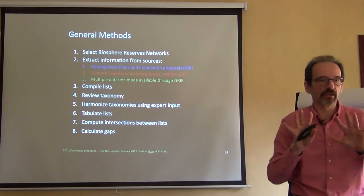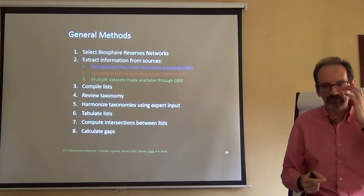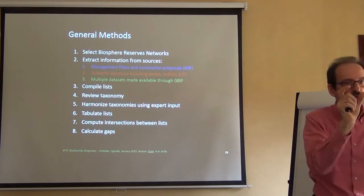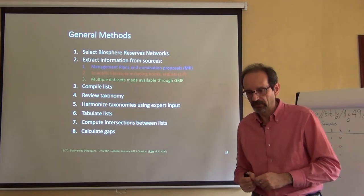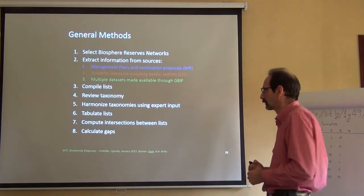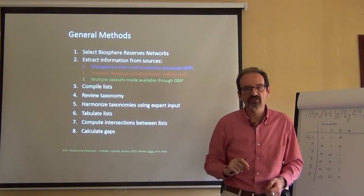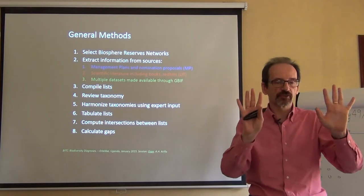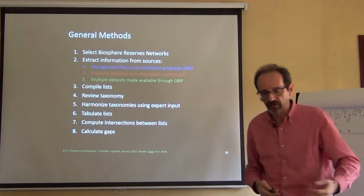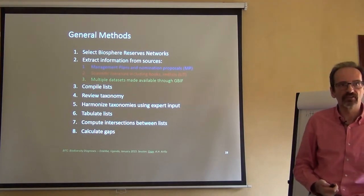This was done by one of my PhD students, trying to reconcile the different taxonomies — very much what we did yesterday with the whales, trying to get all the whales under a single name so we could compare our lists. We harmonize the taxonomies; we need to use experts. In this case, we used experts on vertebrates, which were our target group. We compile the lists, tabulate, and finally compute intersections between the lists to see which species coincide, and from there calculate gaps — where is the lack of knowledge.